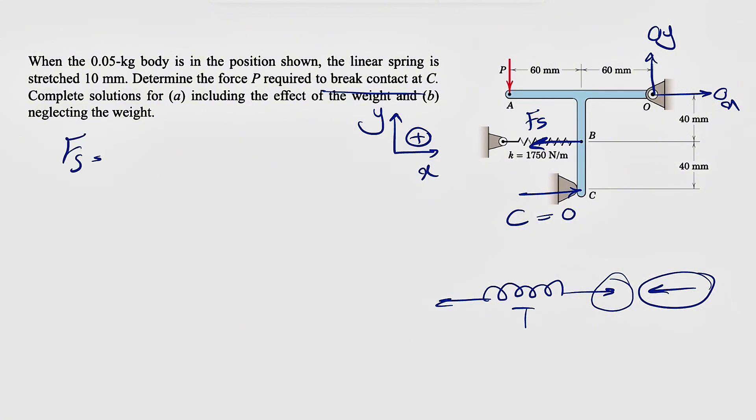That force equals the spring constant times the displacement, which is 10 millimeters. We have k = 750 N/m in the question, times displacement of 10 millimeters or 0.01 meters. That gives us a force of 17.5 Newtons.